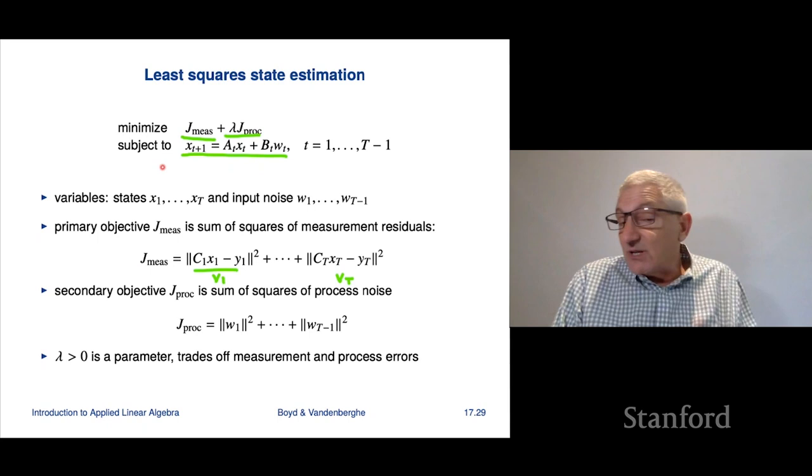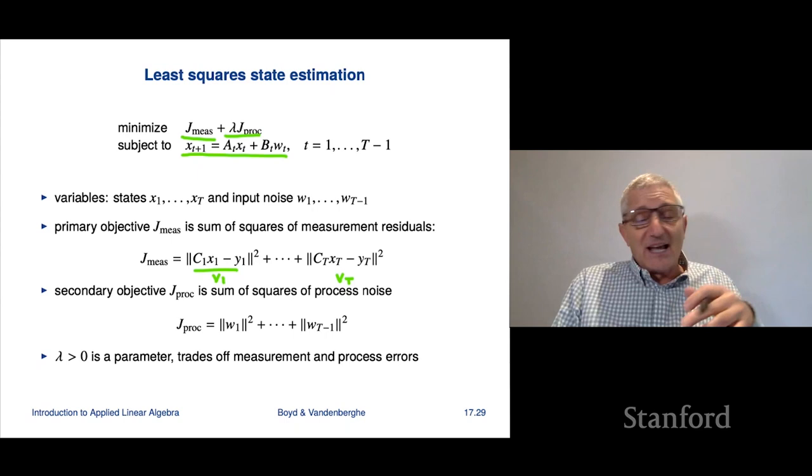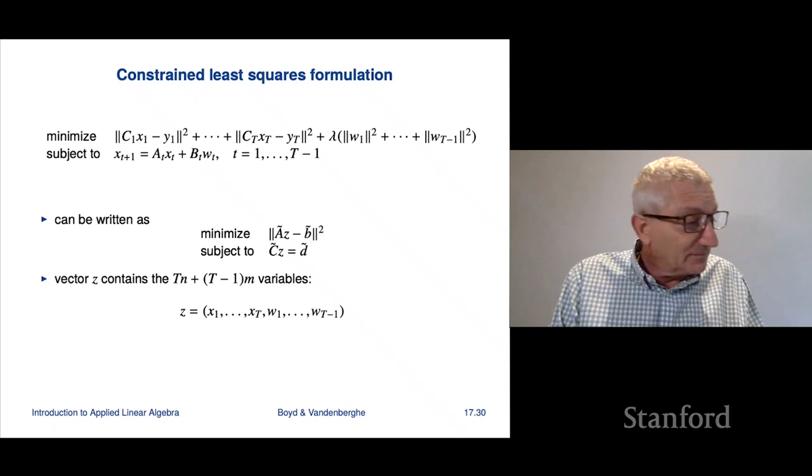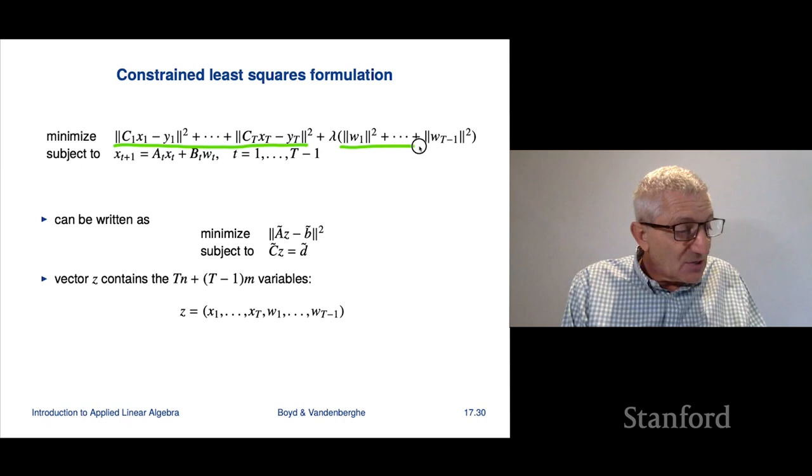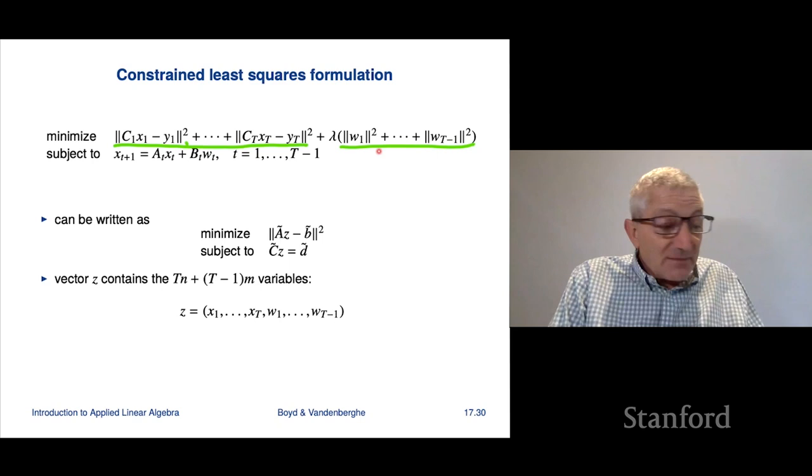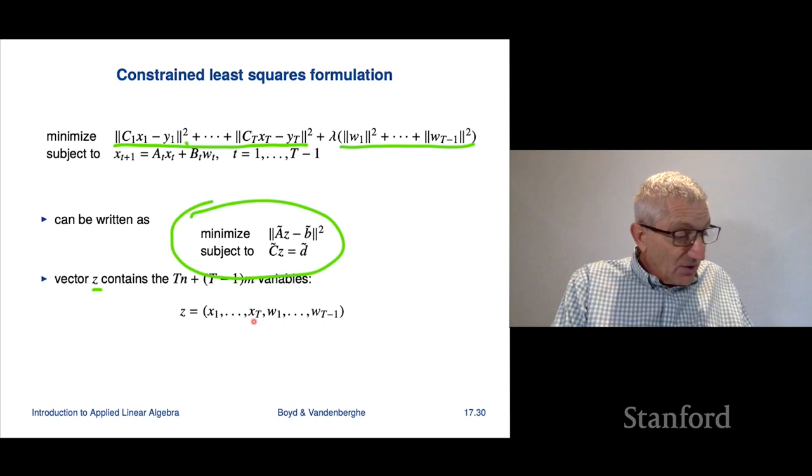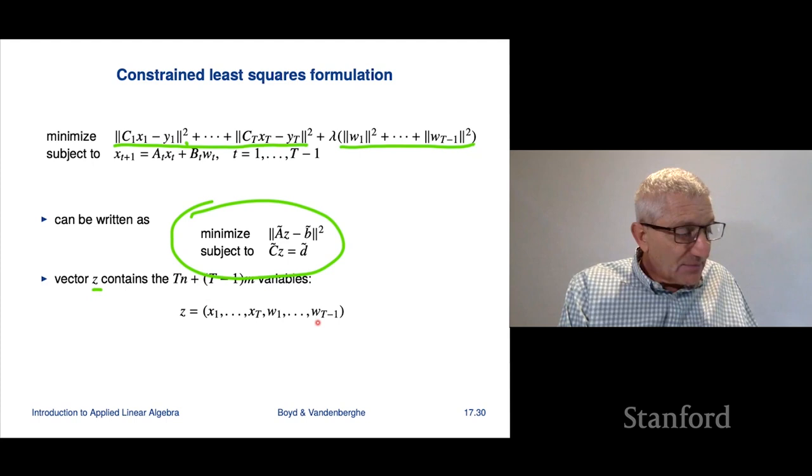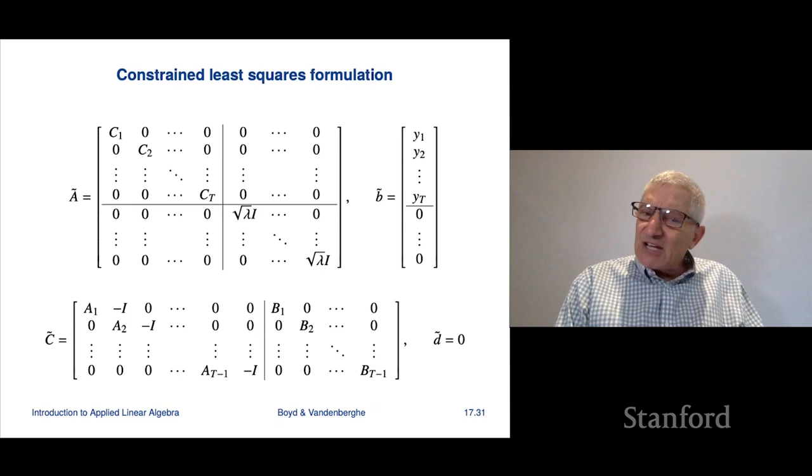All right. So we are going to take this problem and we are going to do the same thing we did in the control, and we're simply going to make it a giant constrained least squares problem. I say giant because it can have thousands of variables, but again, it is just simply not a non-problem. So, okay, here it is. This is our objective. We have to minimize the sum of the squares of the measurement errors noise, plus Lambda times the sum of the squares of the process noise, the W's.